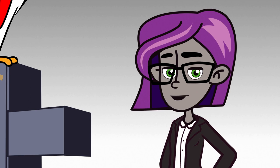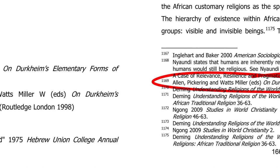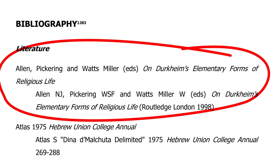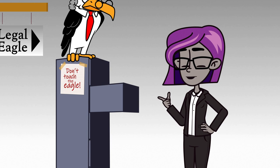Let's recap on two basic principles before we dive in. Number one: for every entry in your bibliography, there must be a corresponding footnote in your text. Number two: the sources under the subheadings of the bibliography are placed in alphabetical order.